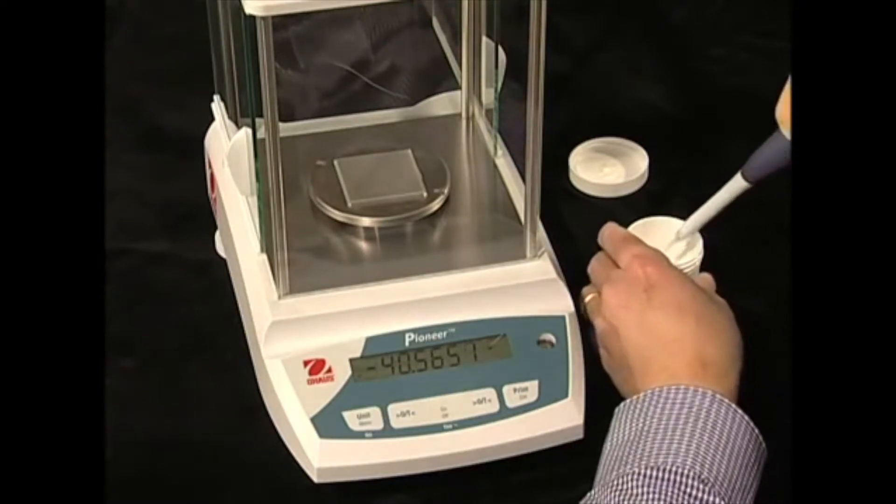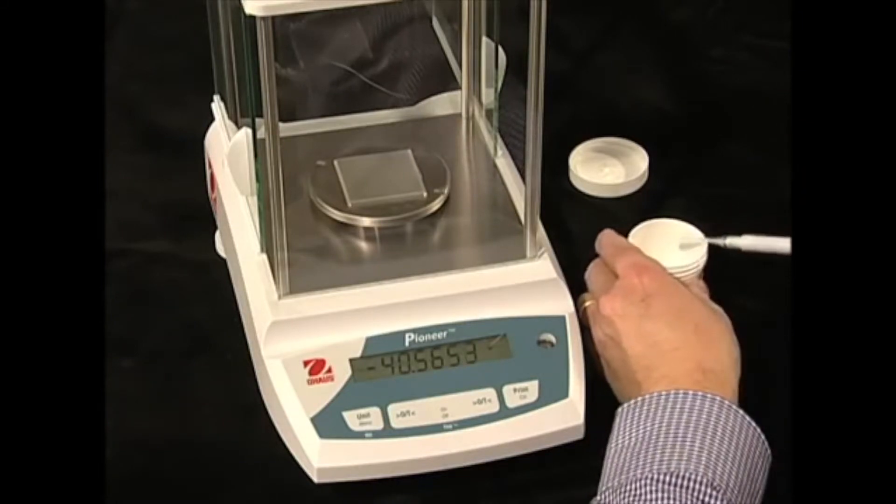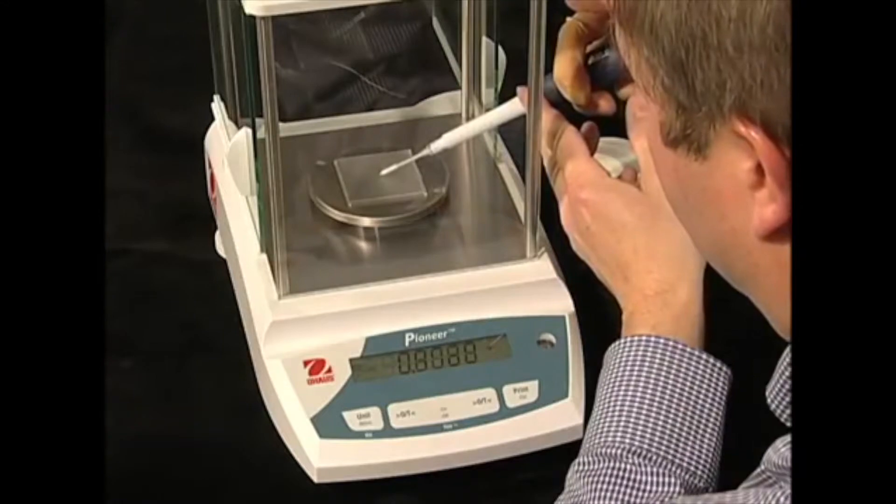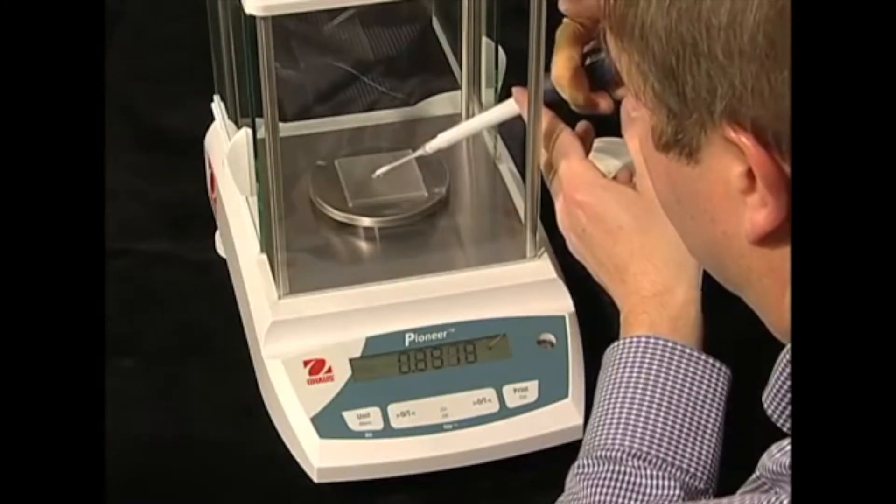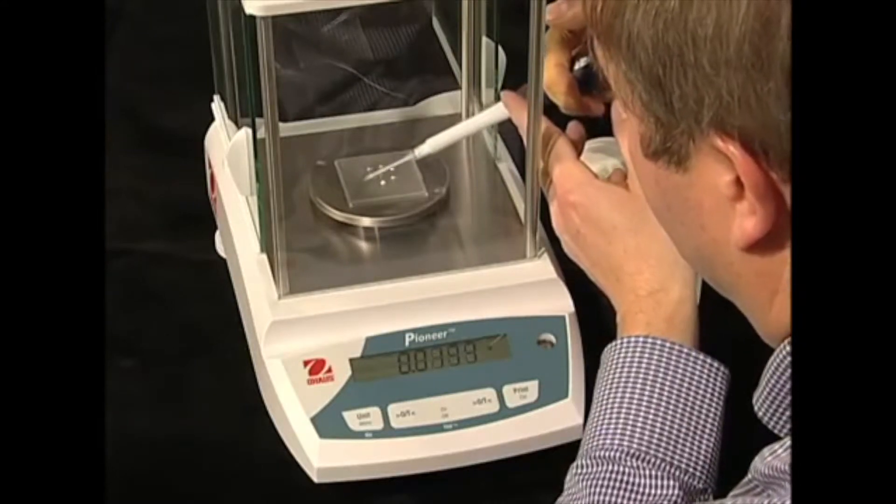To use the positive displacement technique, pull the sample into the pipette and zero out the plate on the scale. Deposit the product starting in the center and work out in a spiral fashion to ensure that the right amount of sample is deposited.